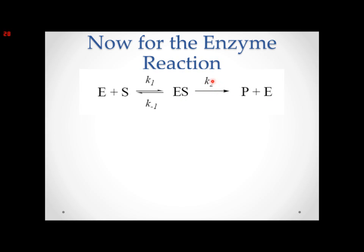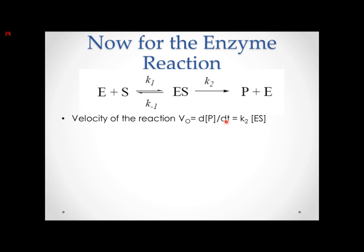These numbers are arbitrary — they're mainly to differentiate between which rate constant. So for the velocity of this reaction, we're trying to find out how fast the product is being formed, because that's what we care about — the end product. So we're trying to find dP over dt. K2 times the concentration of ES will give us the rate of P formation. Now, Michaelis-Menten wanted to add more details so that it could be looked at more objectively. What changes the concentration of ES? Because whatever changes [ES] is going to lead to a change in [P] because of this formula. Remember: V equals K2 times ES.